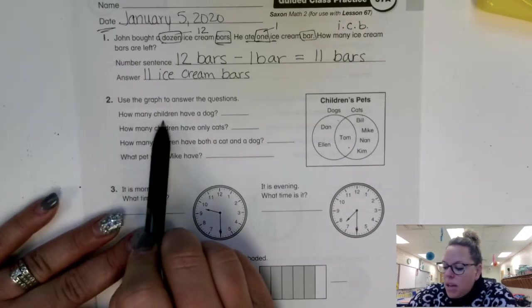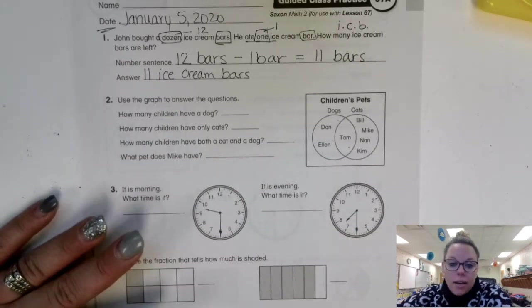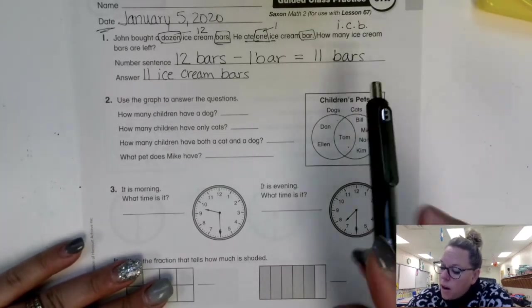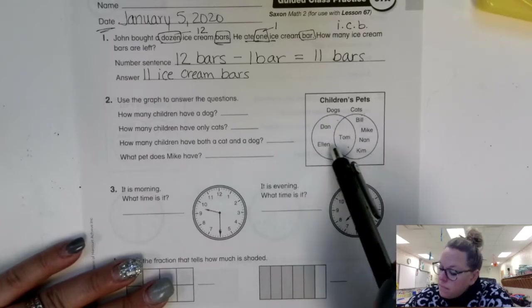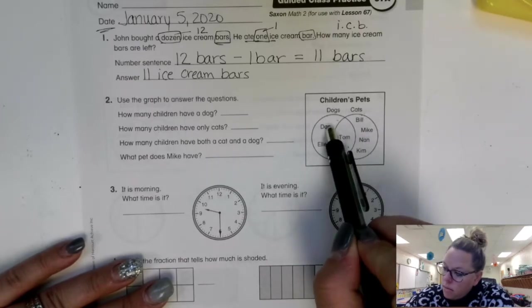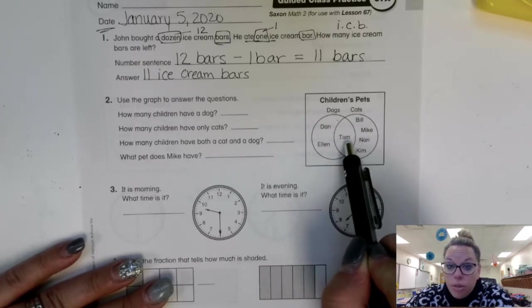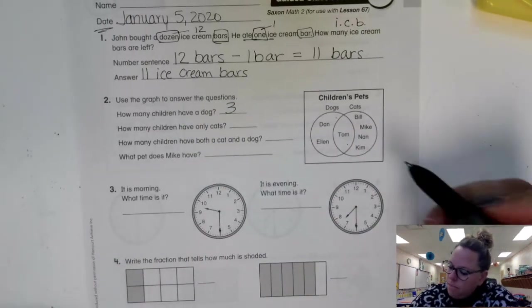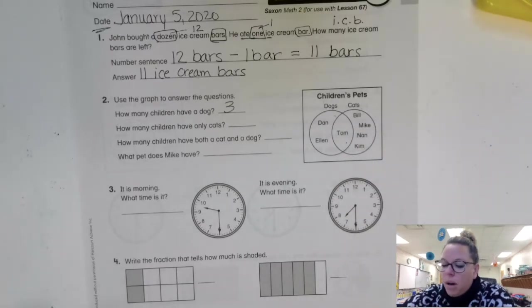Let's look. It says how many children have a dog. It doesn't say have only a dog. It just says a dog. So we have to count these ones here and in the middle. One, two, three. Go ahead and you're going to write down three. Dan, Ellen and Tom all have dogs at their house.